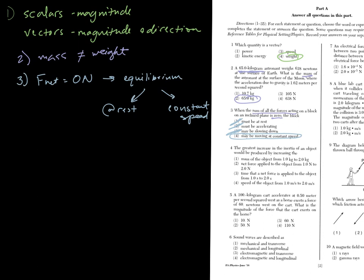Number four: the greatest increase in the inertia. Inertia, so here, let's think that inertia is equal to mass. So we're looking for the greatest increase in mass for the greatest increase in inertia. That's choice one. Inertia is unaffected by anything else, it's just mass.